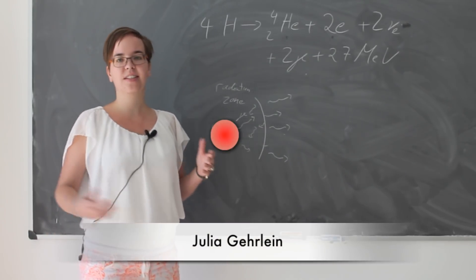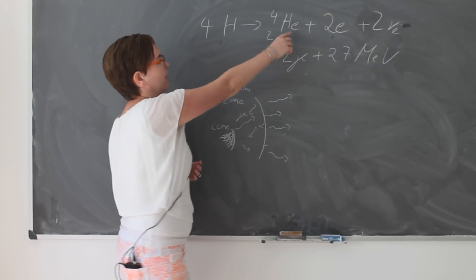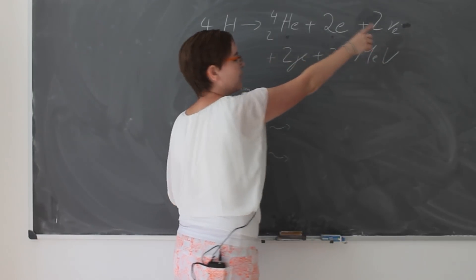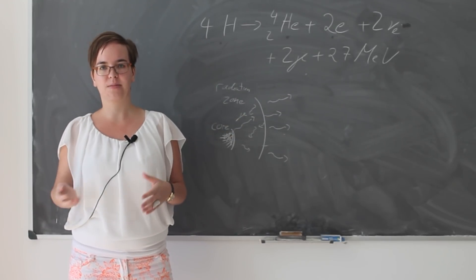Neutrinos and photons get produced in the center of the Sun by hydrogen fusion. Four protons fuse to helium, two electrons, two neutrinos, two photons, and an energy of 27 MeV gets released in this process.